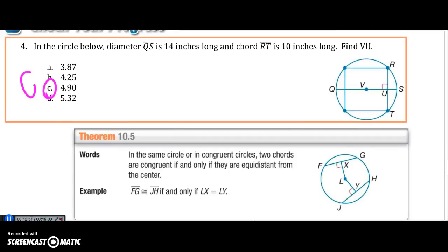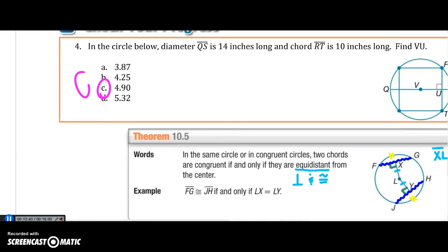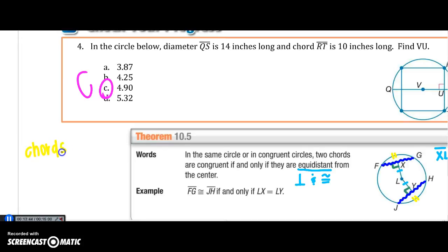in the same circle or in congruent circles, two chords are congruent if and only if they are equidistant from the center. So remember that's perpendicular and congruent. All right, so if XL is congruent to LY, I also know, and they're perpendicular of course, then I can say that FG is congruent to JH, which also in turn means my arcs are congruent to each other as well. So we can say our chords are equal and perpendicular to the center.